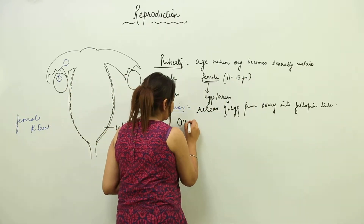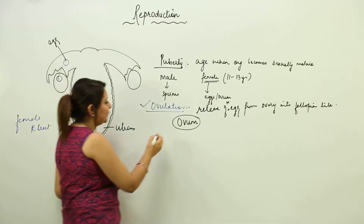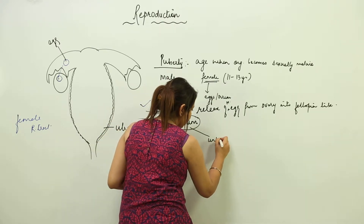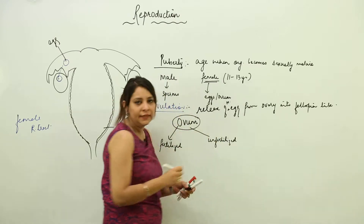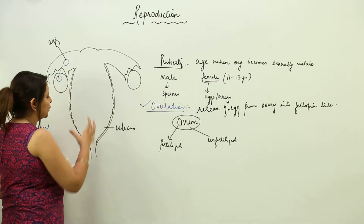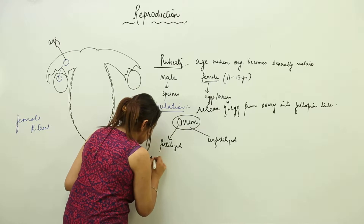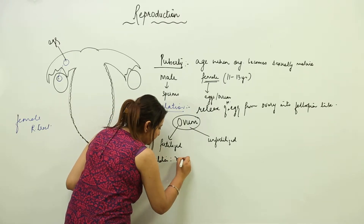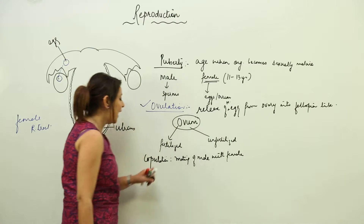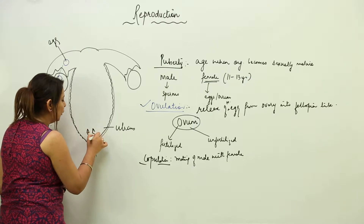The fate of the ovum — the egg released into the fallopian tube — is that it may get fertilized or it may remain unfertilized. Let's take the fertilization process first. When the egg is in the fallopian tube, copulation takes place. Copulation is the mating of male with female, and as a result sperms are discharged into the vaginal tract — semen is released containing billions of sperms.